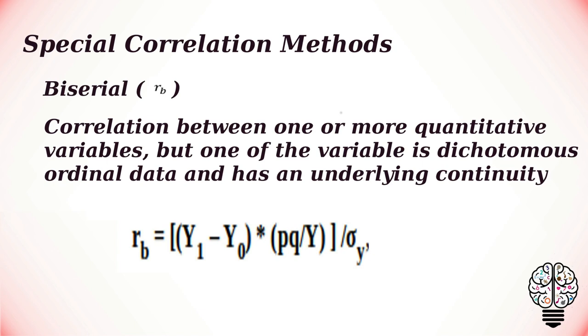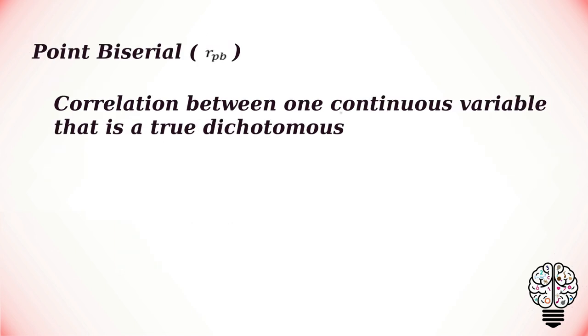Point biserial correlation coefficient is the correlation between one continuous variable and another variable that is a true dichotomous. For example, correlation between height and gender. The formula for the point biserial correlation coefficient is given below.